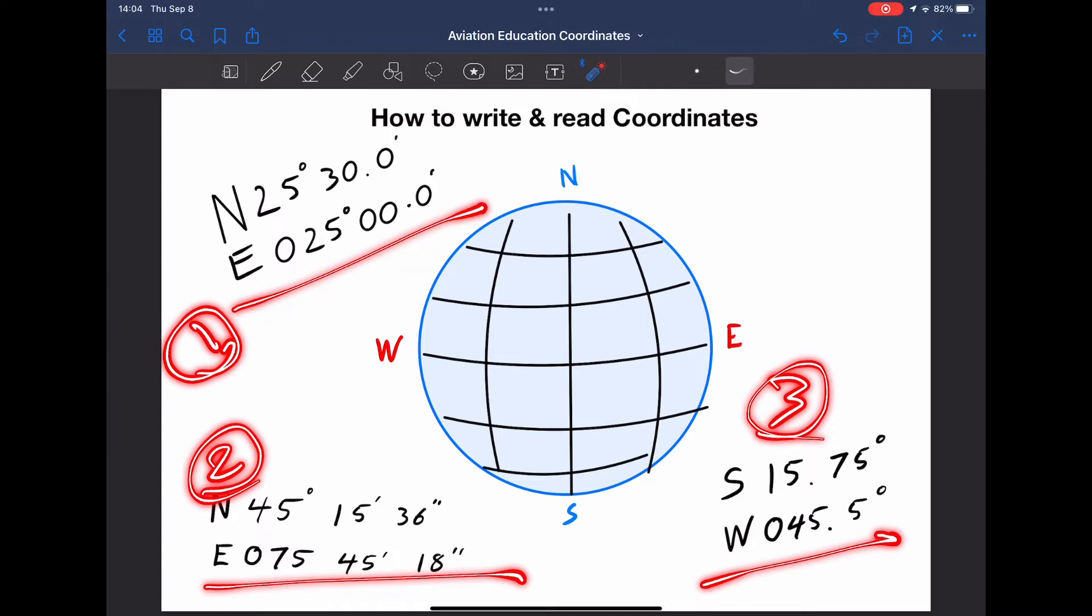In aviation, we use coordinate method number one. It's read 25 degrees, 30 decimal zero minutes north. I guess it's sort of a compromise in between. We don't use seconds like we do coordinate two, and we don't use decimal degrees like we do in coordinate number three. In aviation, we use decimal minutes when we write out our coordinates.